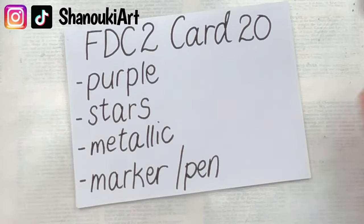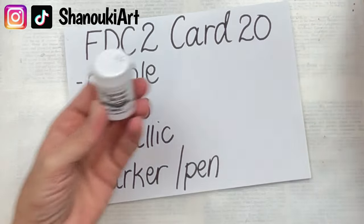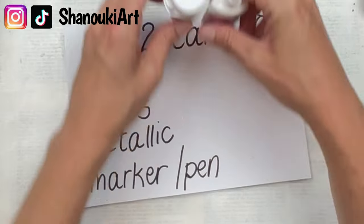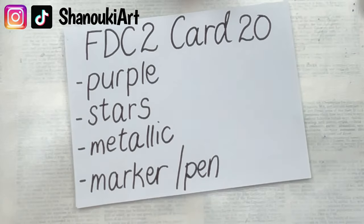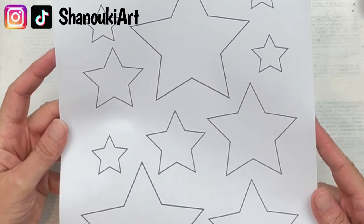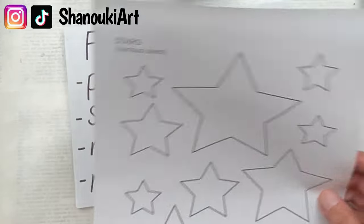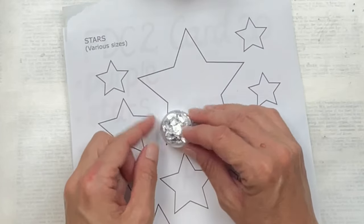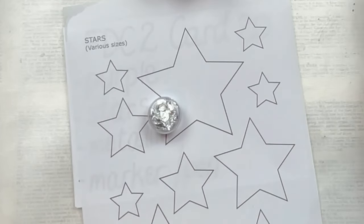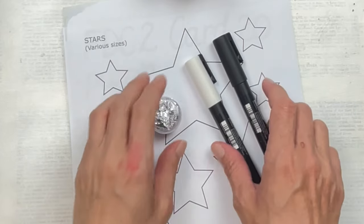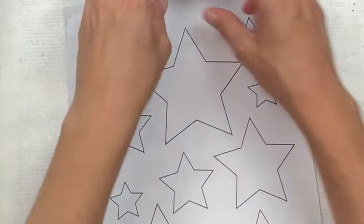For the color purple I'm using my Brusho and Color Burst powders. For the stars I'm going to use a template to cut them out since I'm not good at drawing them freehand. For my metallic I'm using silver leaf, and I have my Posca pens and fine liners as my marker or pen options. I'll decide later which ones I'm going to use and how.